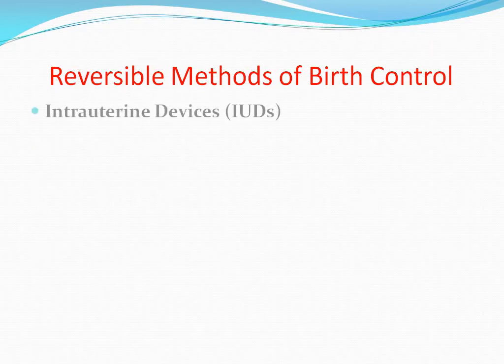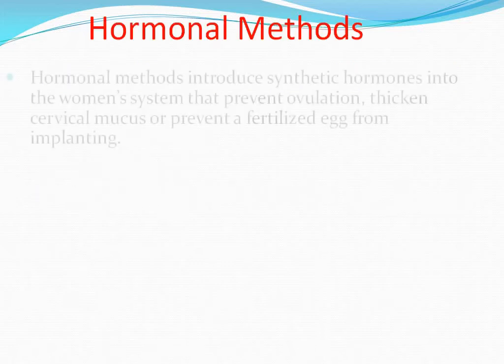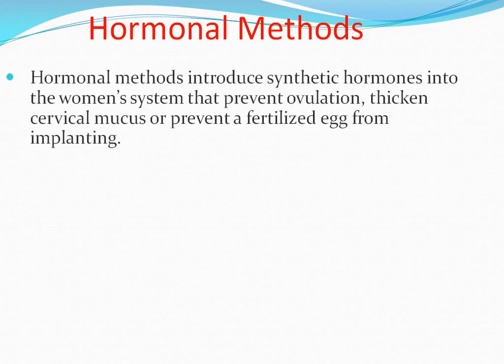Reversible methods of birth control include IUDs, hormonal methods, barrier methods, fertility awareness, and abstinence.